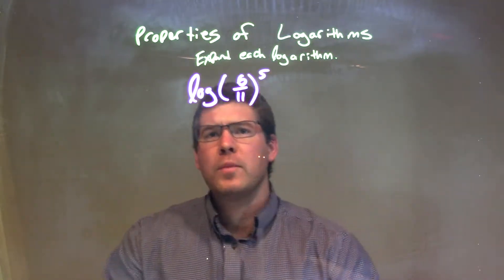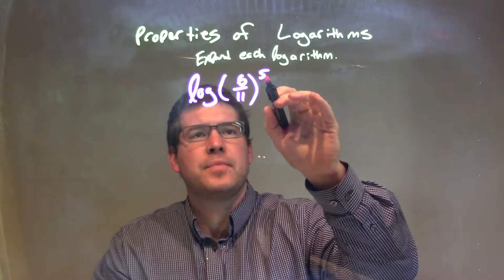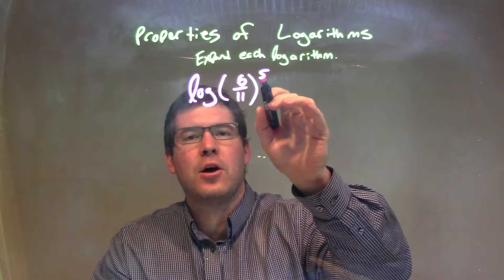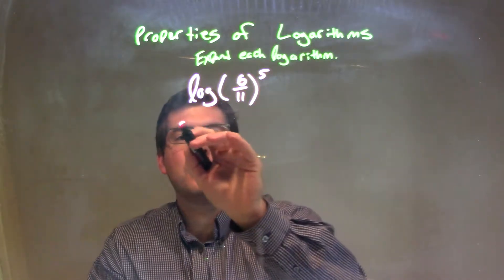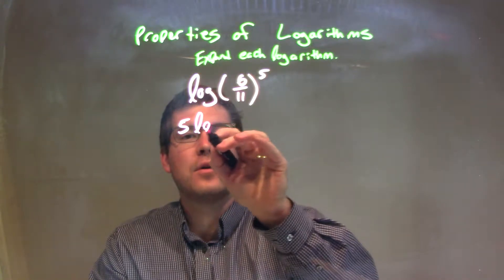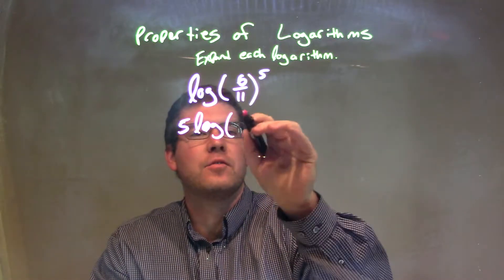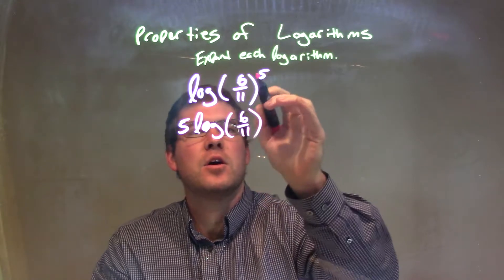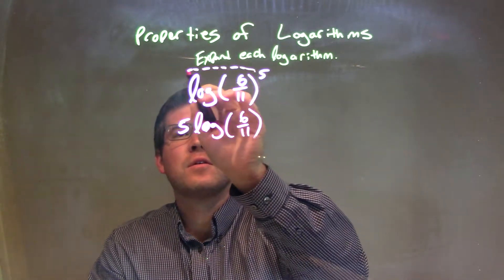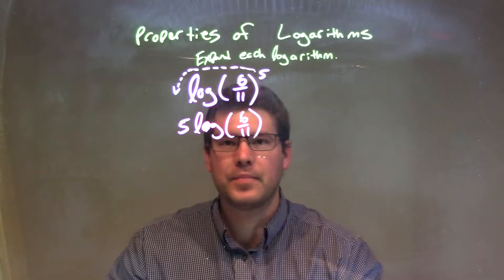Well, one thing we know about exponents is that that exponent up there to the 5th power can be rewritten out front to be 5 times the log. 5 times the log of 6 divided by 11. So the 5 really can come out front there.